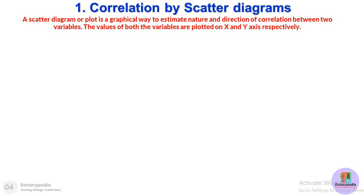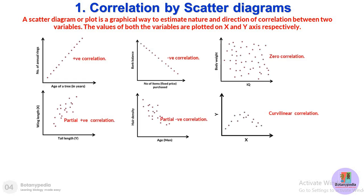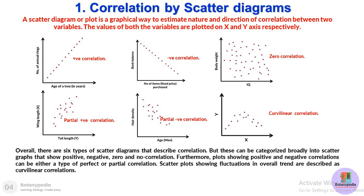The values of both variables are plotted on x and y axes respectively. If you carefully observe the patterns of how different values are scattered, you will see that in some cases values are perfectly aligned in a straight line, either increasing in a particular fashion or decreasing as we increase the first variable.